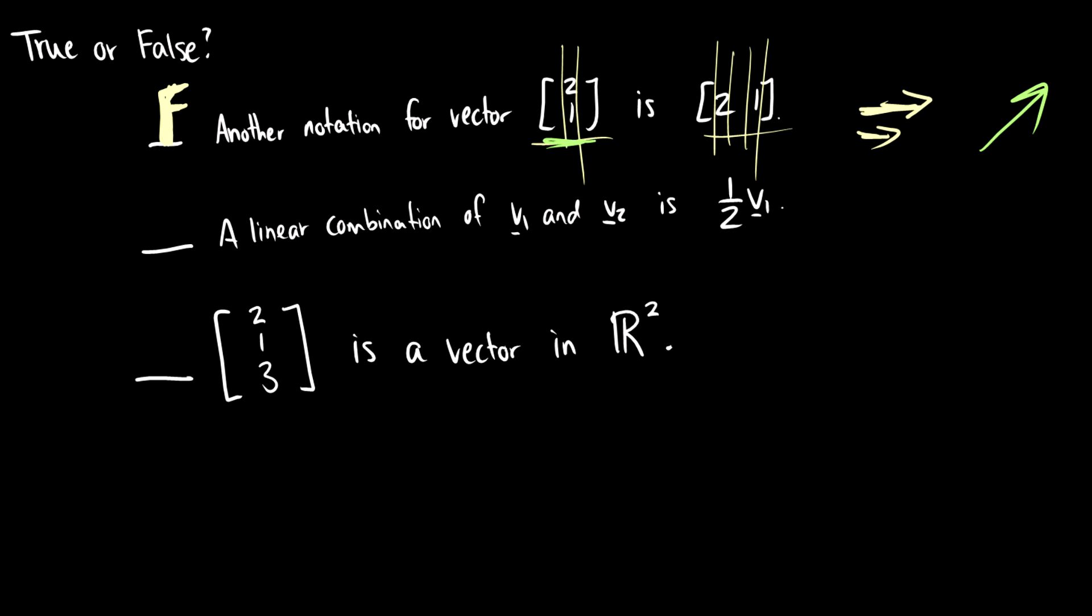A linear combination of v1 and v2 is one-half v1. This is true. Remember, a linear combination is just a scalar times a vector. So what we can do is we can set y is equal to one-half v1 plus zero v2. That is a linear combination of vectors v1 and v2. So this is true.